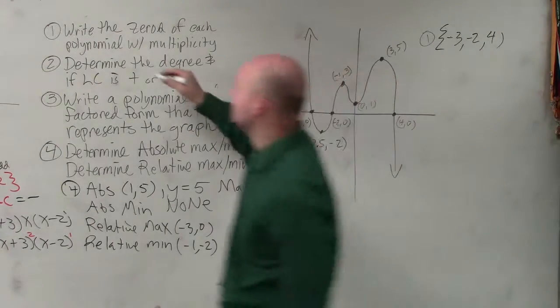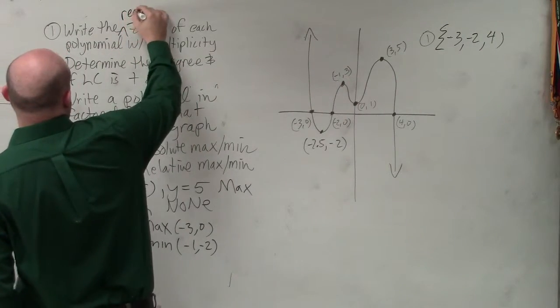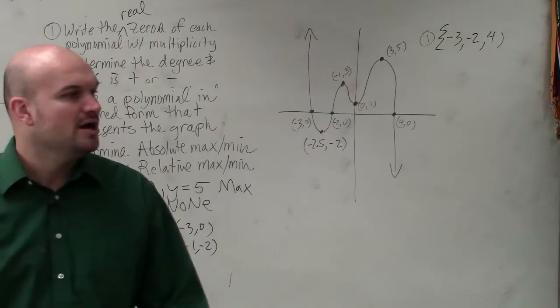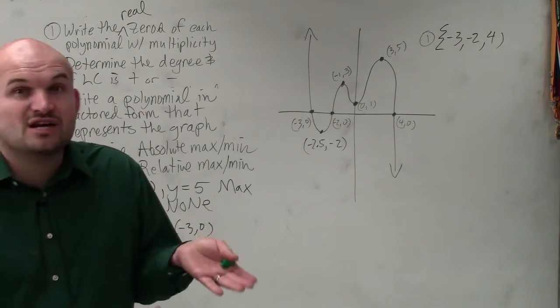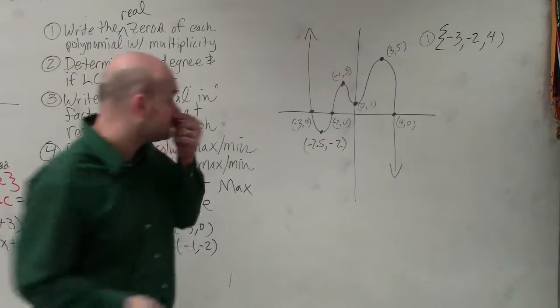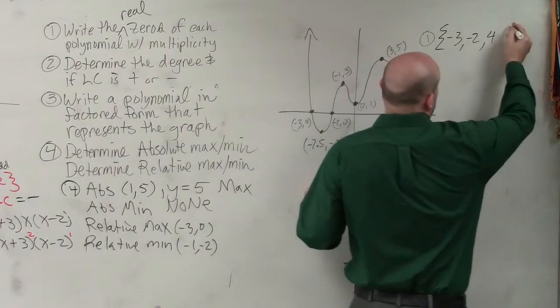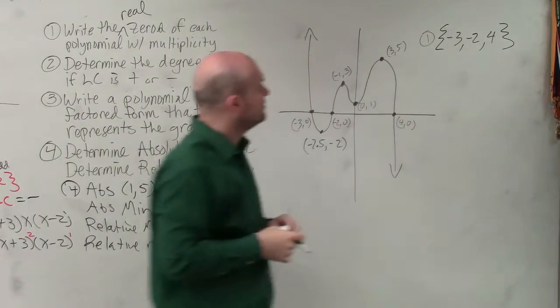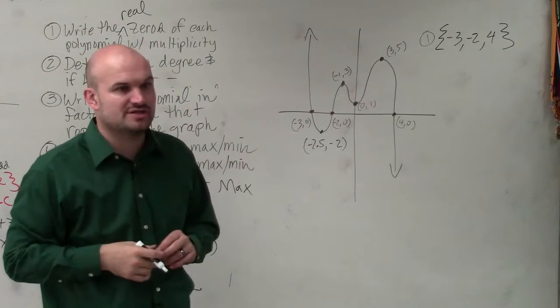I didn't write that in there. Write the real zeros. That's really important. I wrote that in last time, but we're finding the real zeros. The real zeros are the x-intercepts, right? Everybody agree with me? Negative 3, negative 2, and 4 are the real zeros, correct?